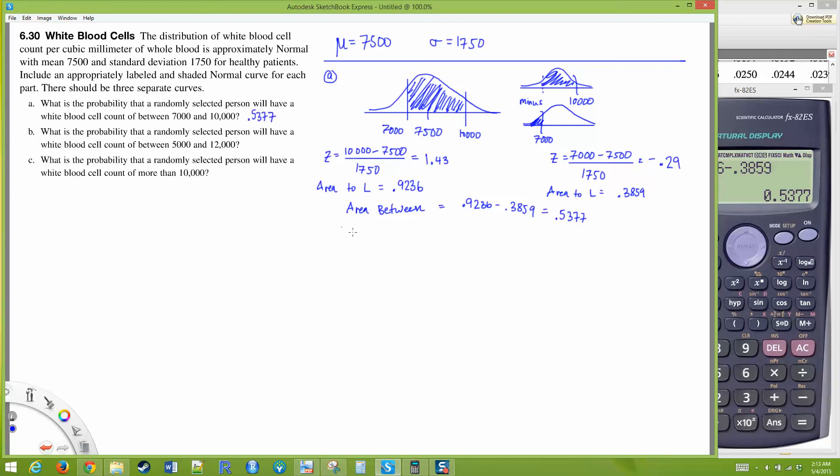We're going to work through part B. In the middle we have 7500, going down to 5000 and up to 12,000. We want to know the area in between. I'd venture to guess quite a few people are going to be in this range. Just like before, we're going to find the z scores for 12,000 and 5000.